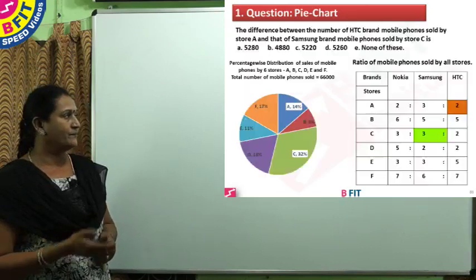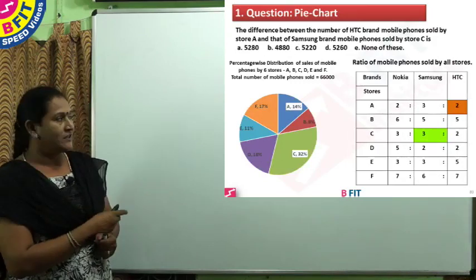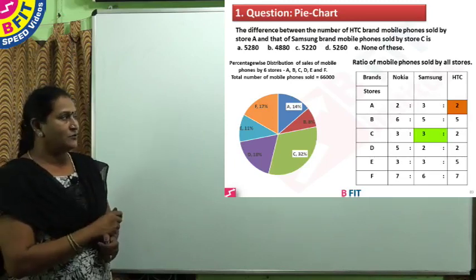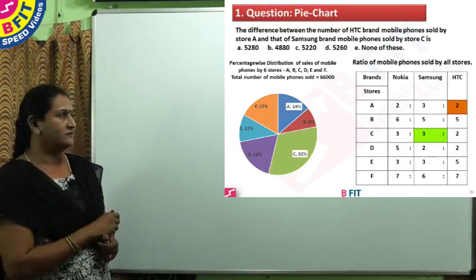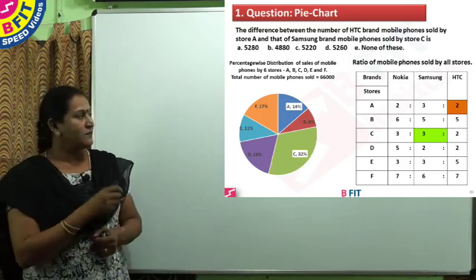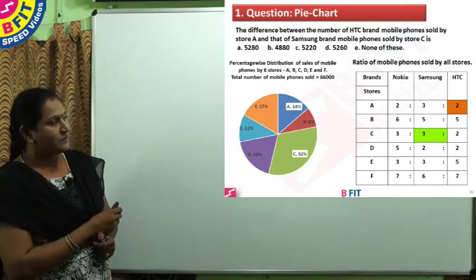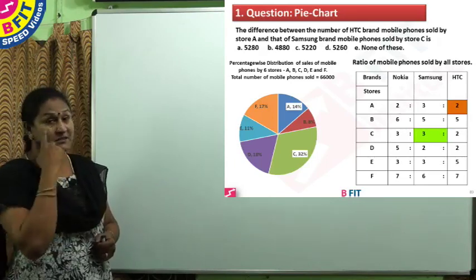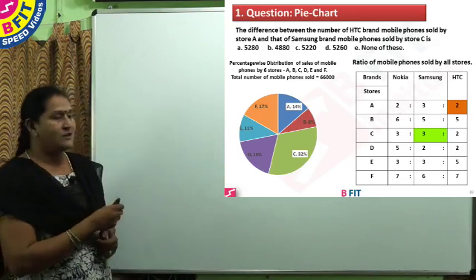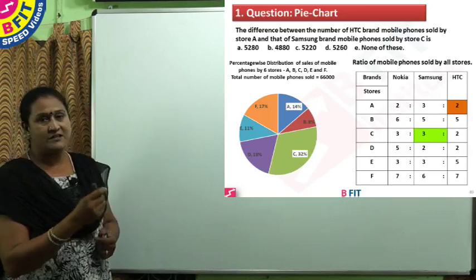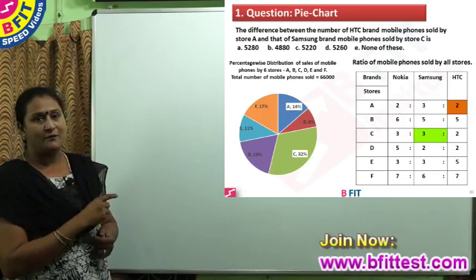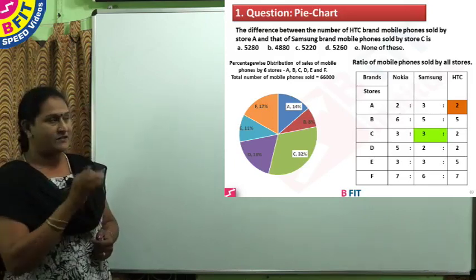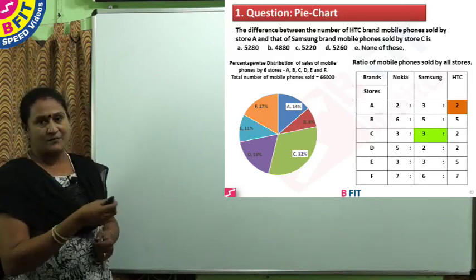Here we have the working slide with the relevant data highlighted for easy understanding. Choose the correct data carefully, otherwise you will end up with the wrong answer. The total number of phones is 66,000. We need to find 14% for store A. Students normally find 14% of 66,000 and then find the HTC portion. For store A, the ratio is 2:3:2, giving 7 total parts, out of which HTC is 2 parts. Similarly, we work out Samsung phones for store C.